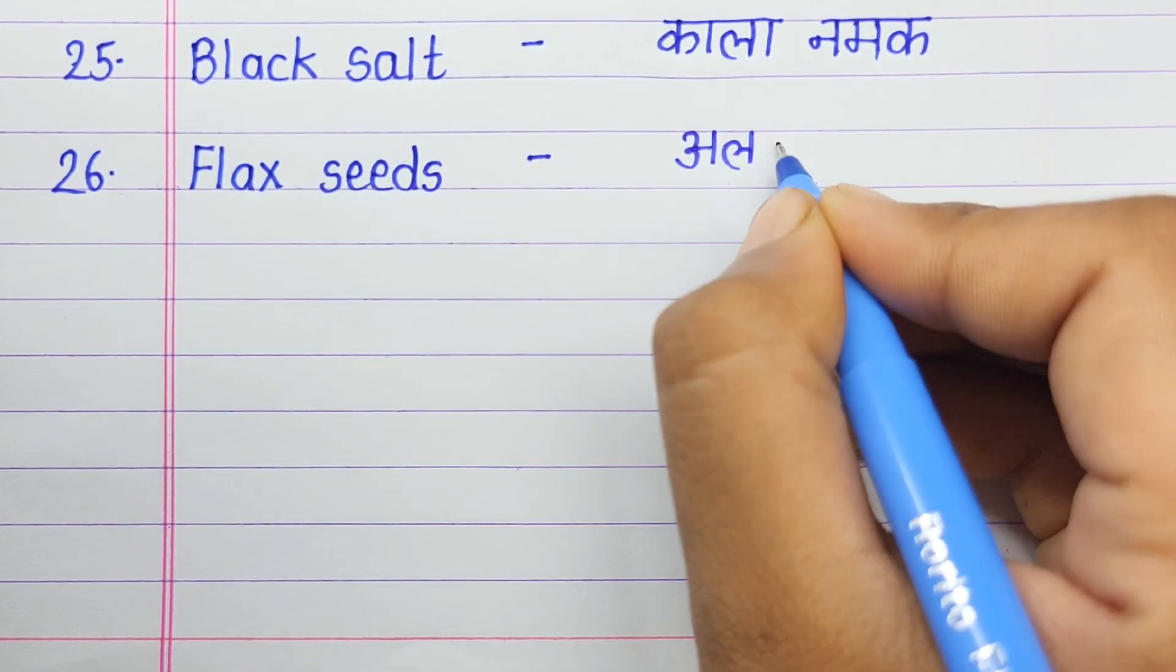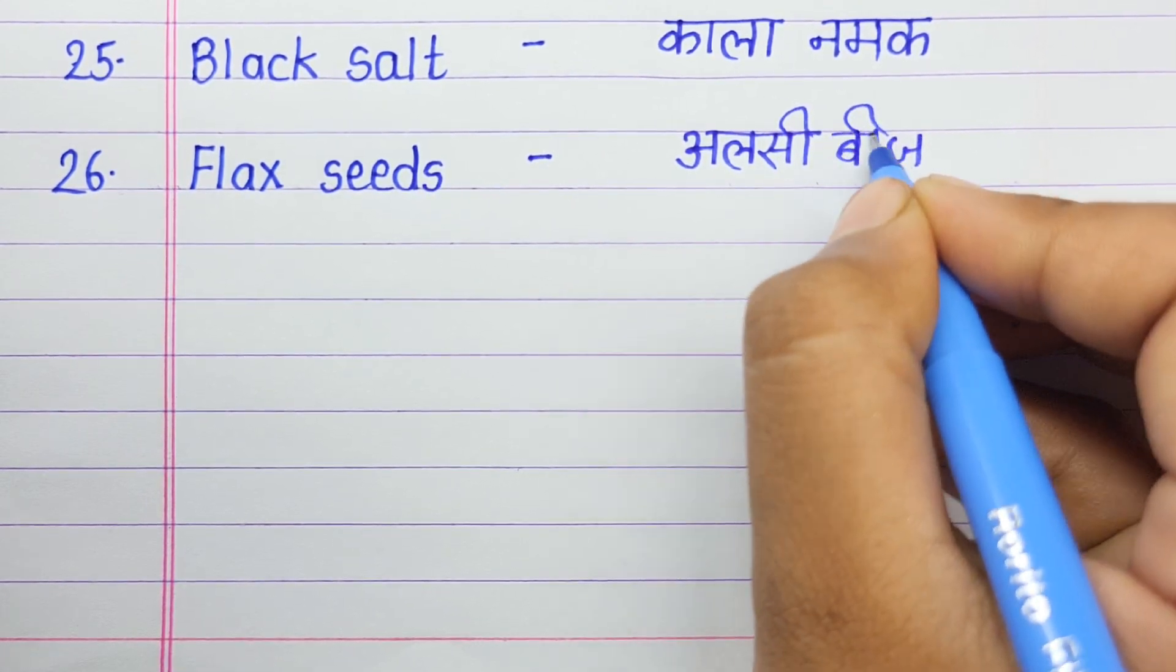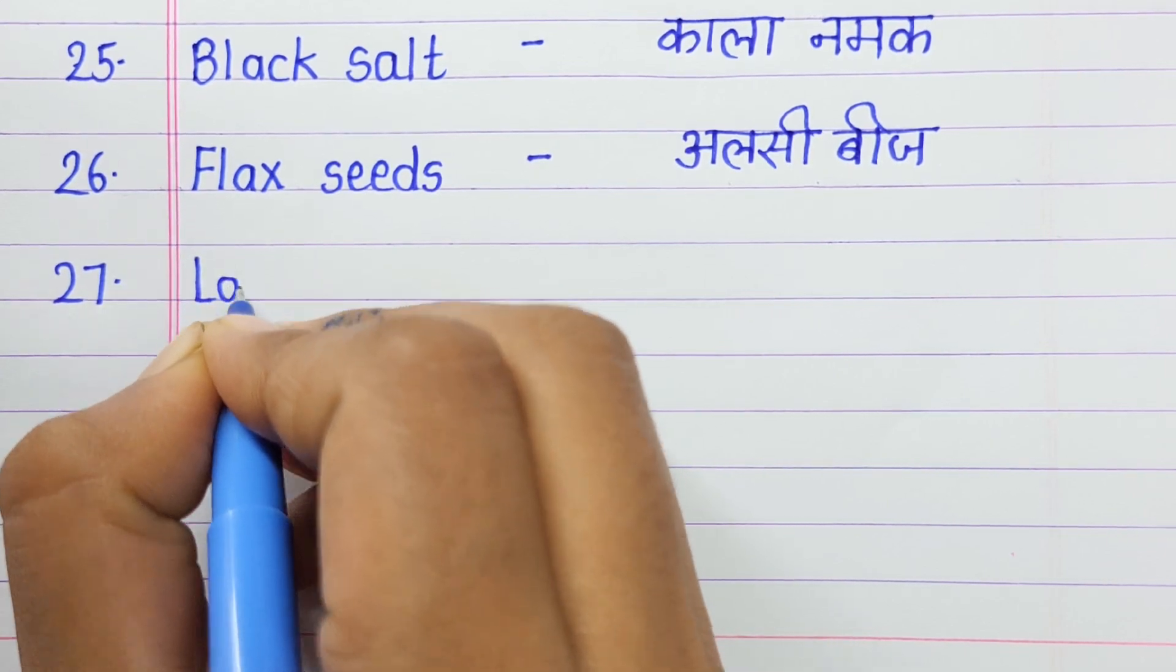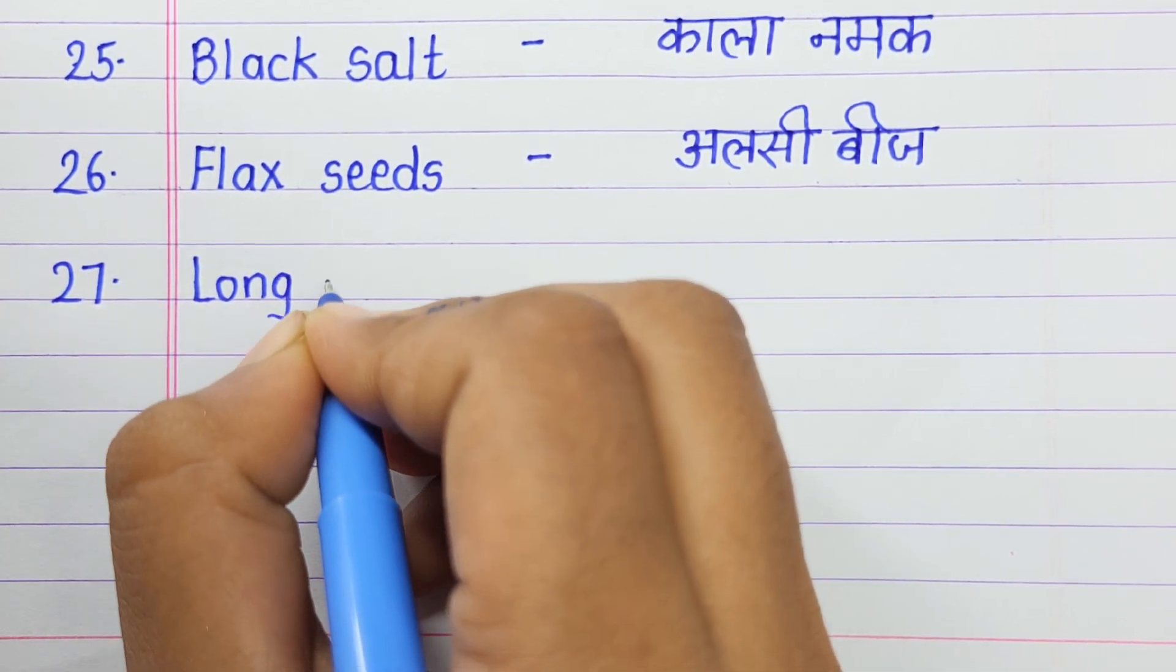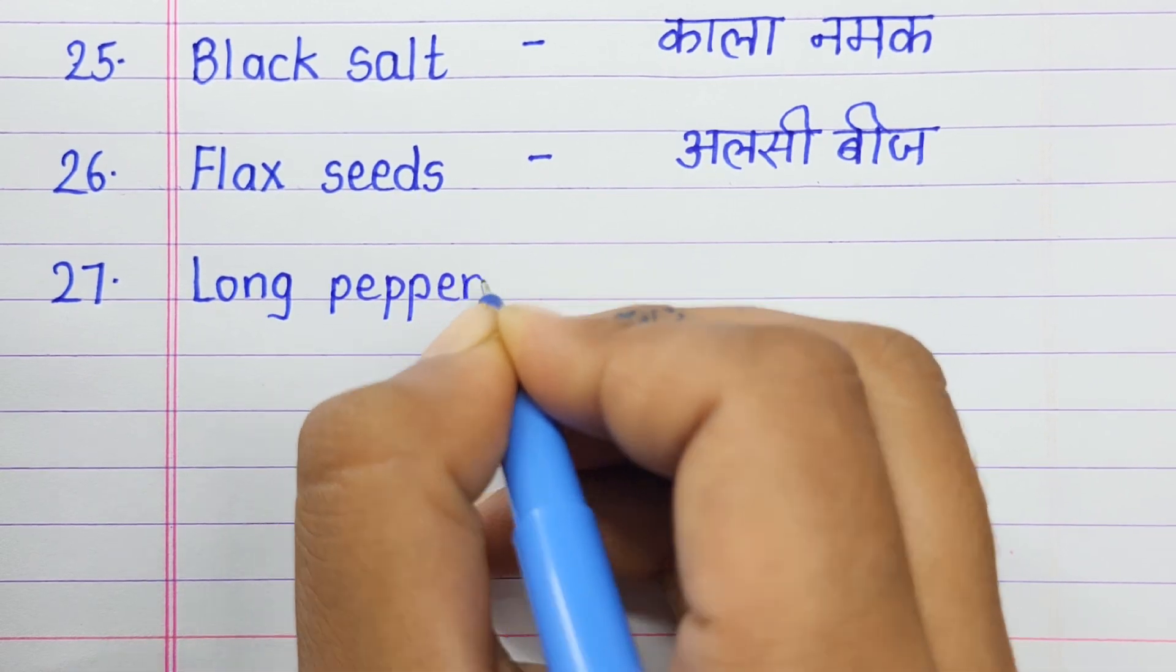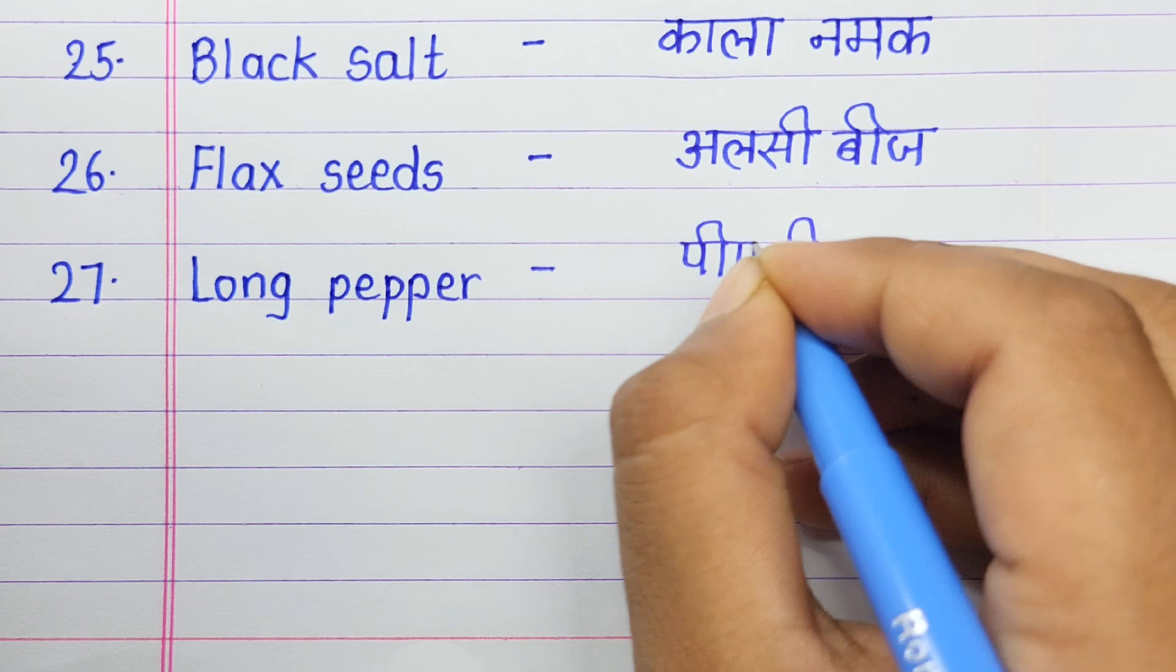Number twenty-six: Flax seeds means alsi beej. Number twenty-seven: Long pepper means peeply.